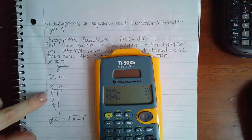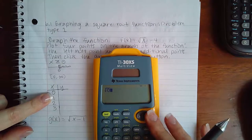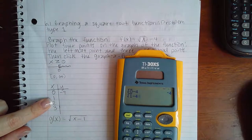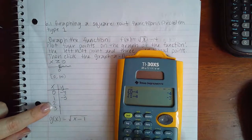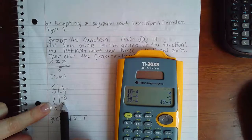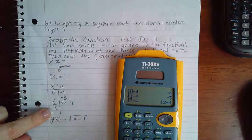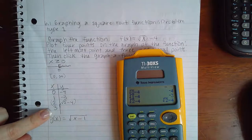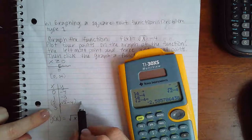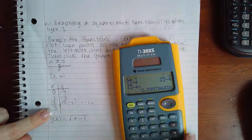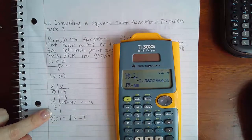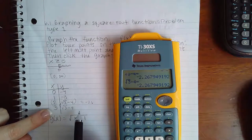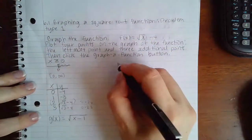When I plug in zero I get the square root of zero minus four, so the y-value is negative four. When I plug in one, square root of one minus four gives negative three. For x equals two, I get square root of two minus four — in the computer I'll type this exactly, but on paper I need the decimal, which is about negative 2.6. For x equals three, square root of three minus four is about negative 2.3.